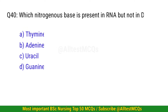Question 40. Which nitrogenous base is present in RNA but not in DNA? The correct option is C: Uracil.